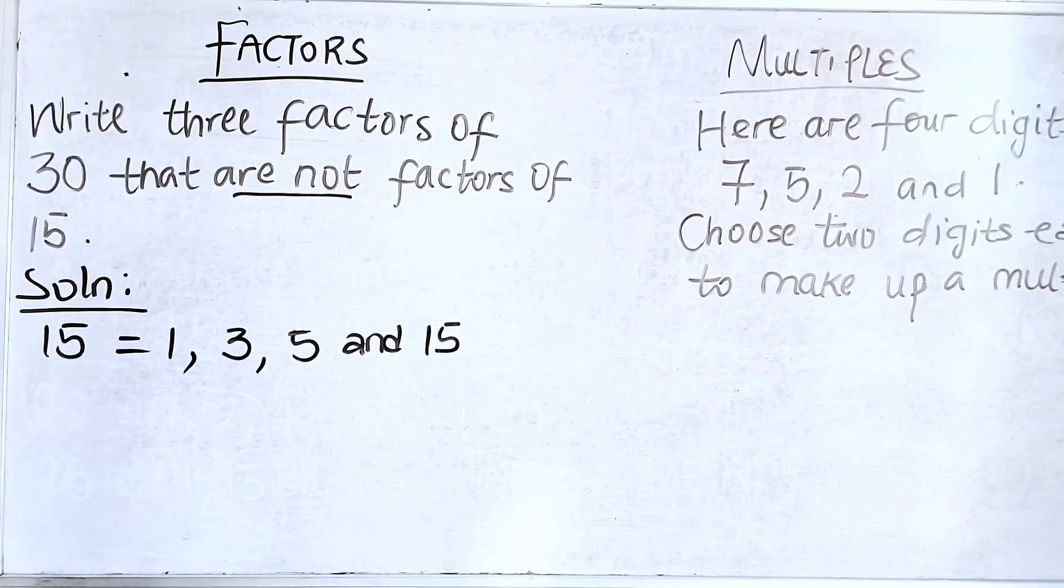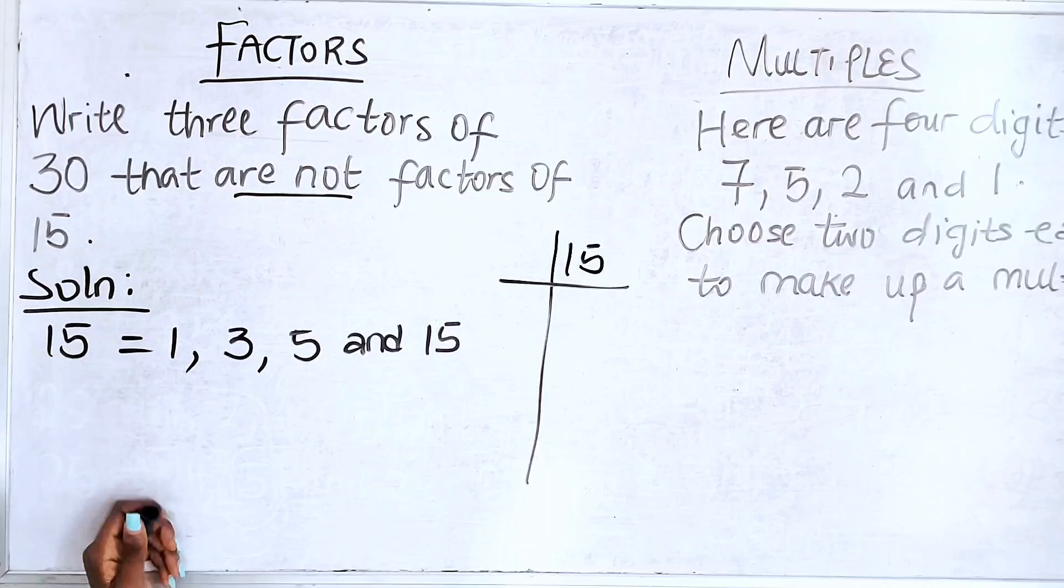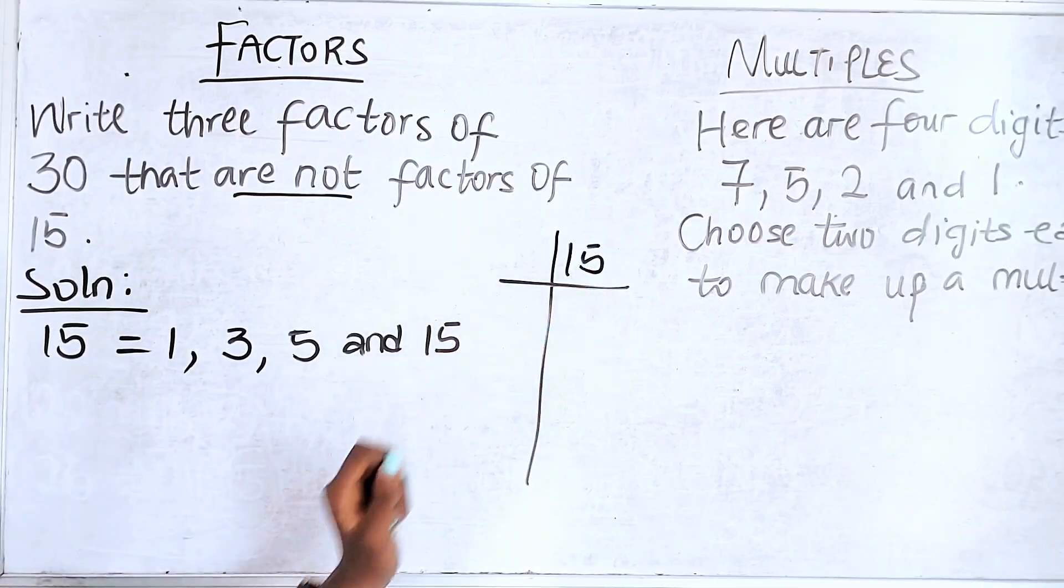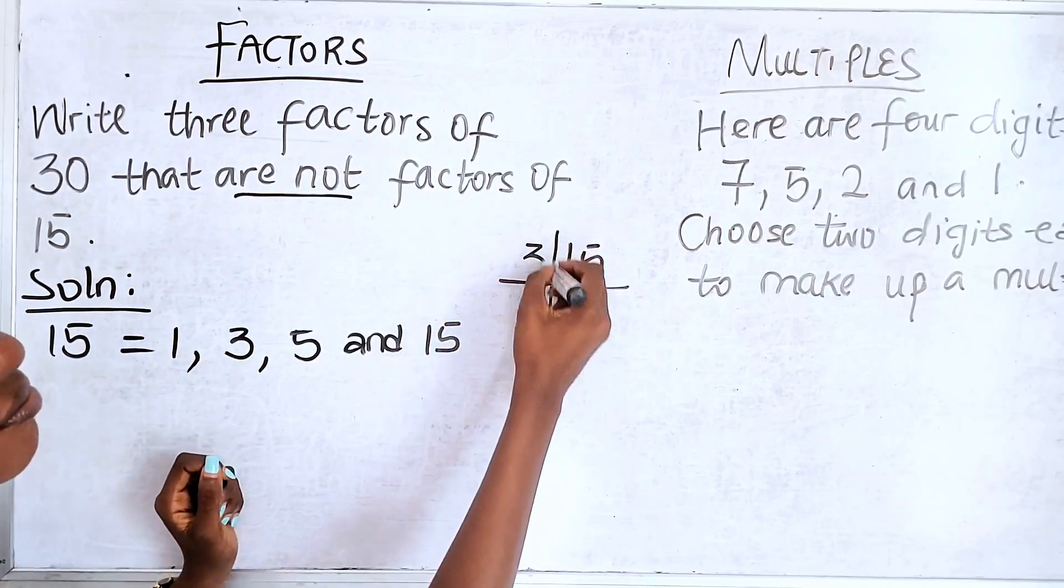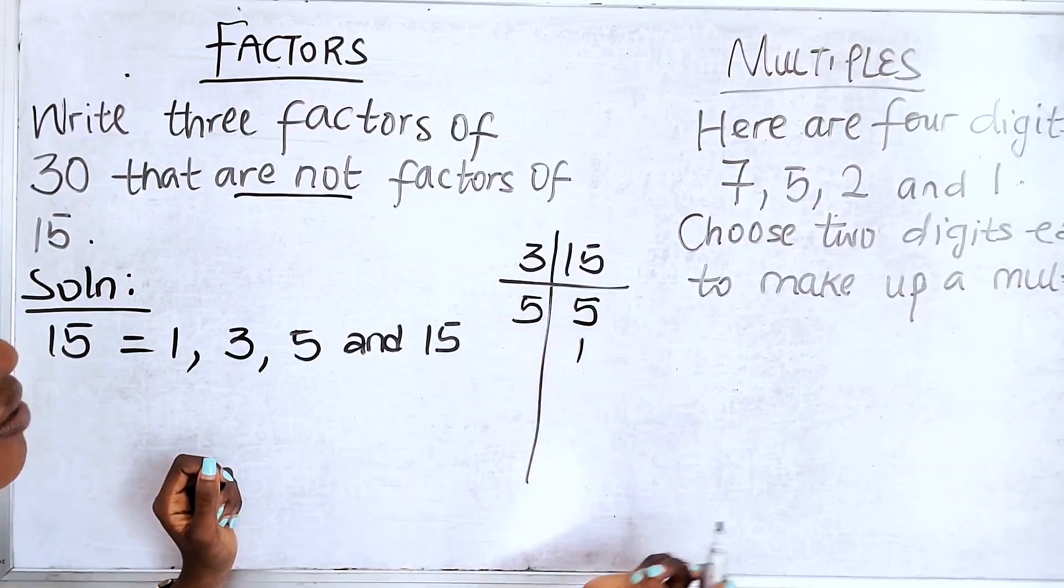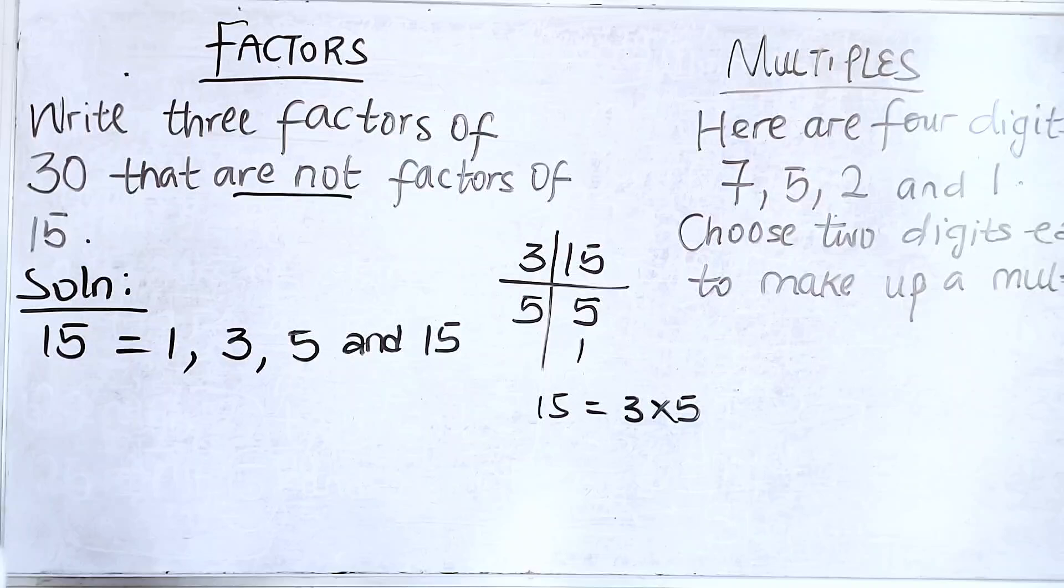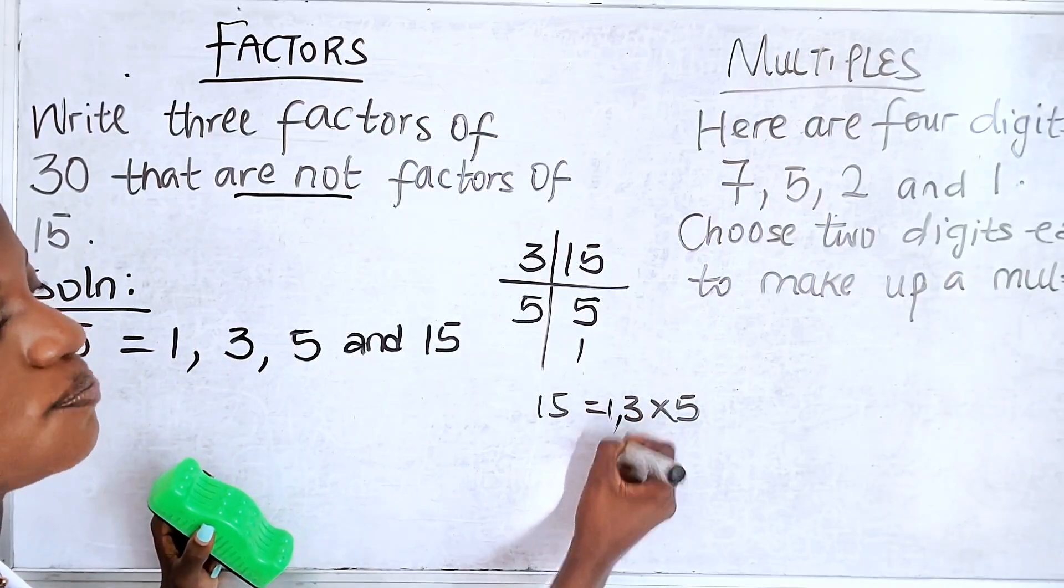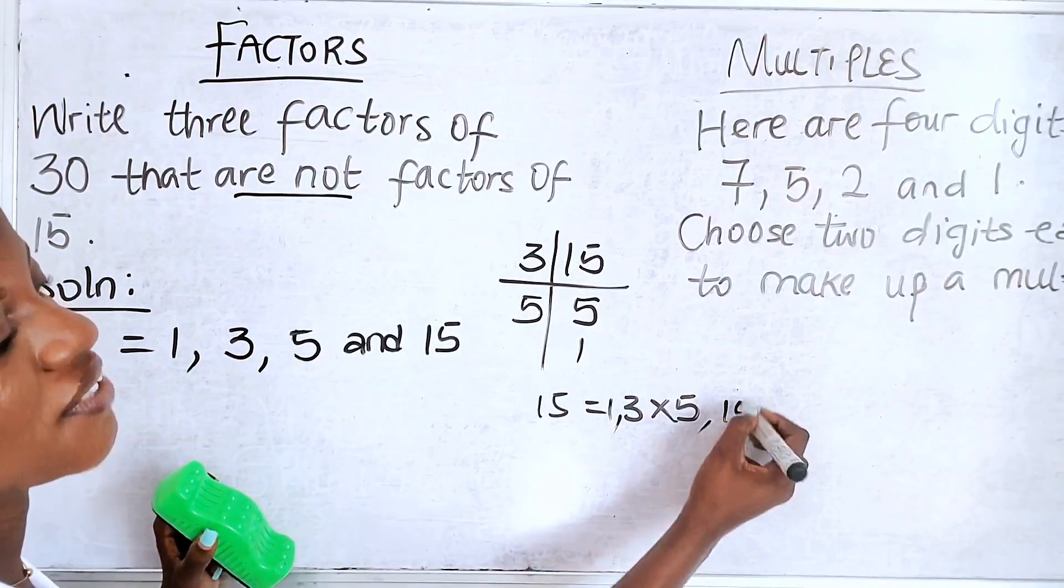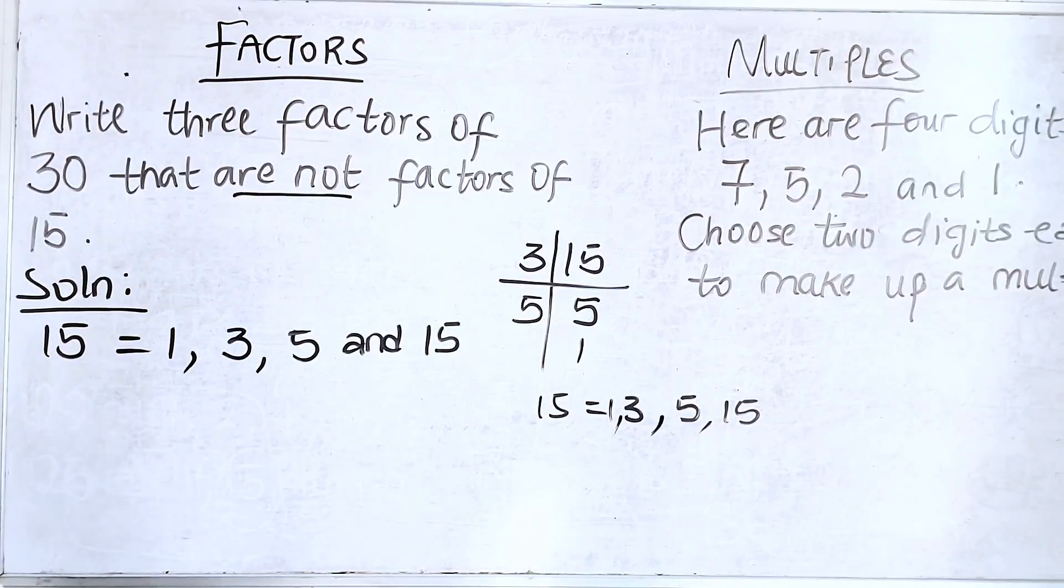What are those numbers that can go in 15 without any remainder? You can come and do it like this. So I say what can go in 15? 3. So 3 in 15, 5. 5 in 5, 1. So you are left with 3 times 5 to make up 15. Remember also that 1 will always be a factor and 15 itself will always be a factor. This makes up the factors of 15.